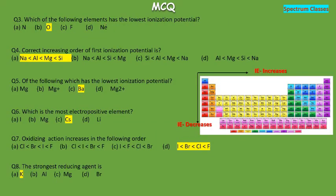The third MCQ asks which of the following elements has the lowest ionization potential: nitrogen, oxygen, fluorine, or neon. If nothing is specified, it means the first ionization potential. As discussed, oxygen has the lowest among these because nitrogen has extra stability due to its half-filled 2p3 orbital. So oxygen has the lowest first ionization potential.